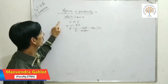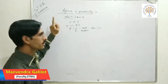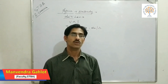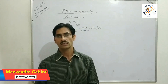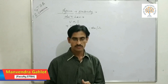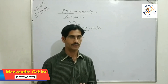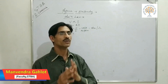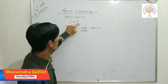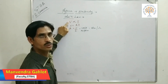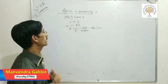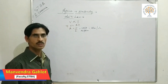According to Ohm's law, when the physical state of a wire or conductor remains constant — such as length, temperature, and area of cross section — then the amount of current is directly proportional to the potential difference across the ends of the wire. This was Ohm's law.